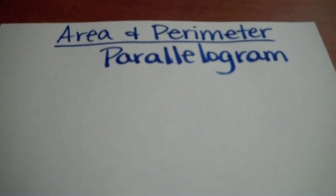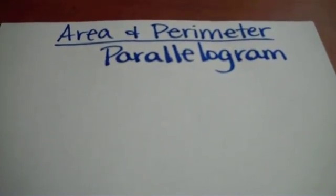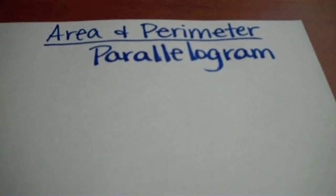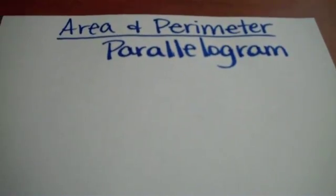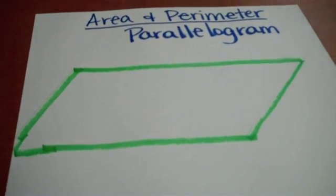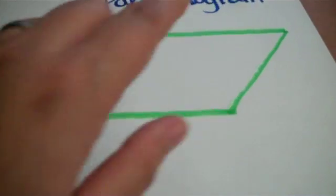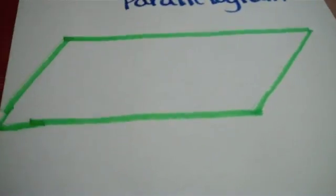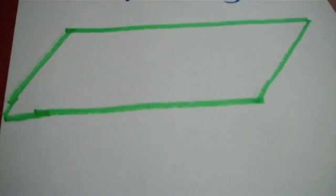What is a parallelogram? It is a four-sided shape, otherwise known as a quadrilateral, that has two sets of parallel sides. Typically, they look like this. As you can see in my parallelogram, this side and this side are parallel, and this side and this side are also parallel. This is a parallelogram.